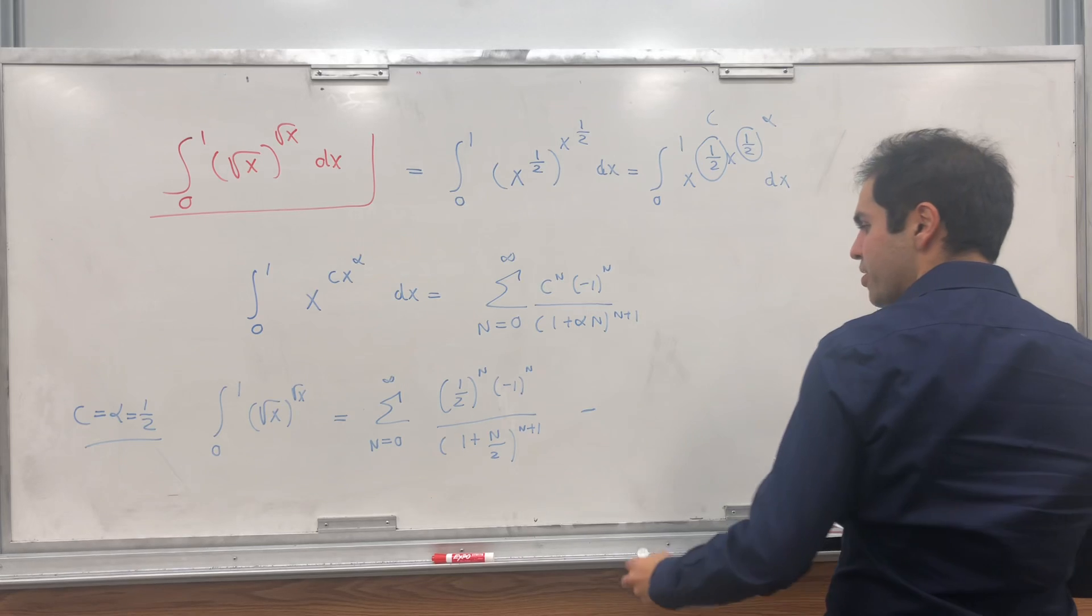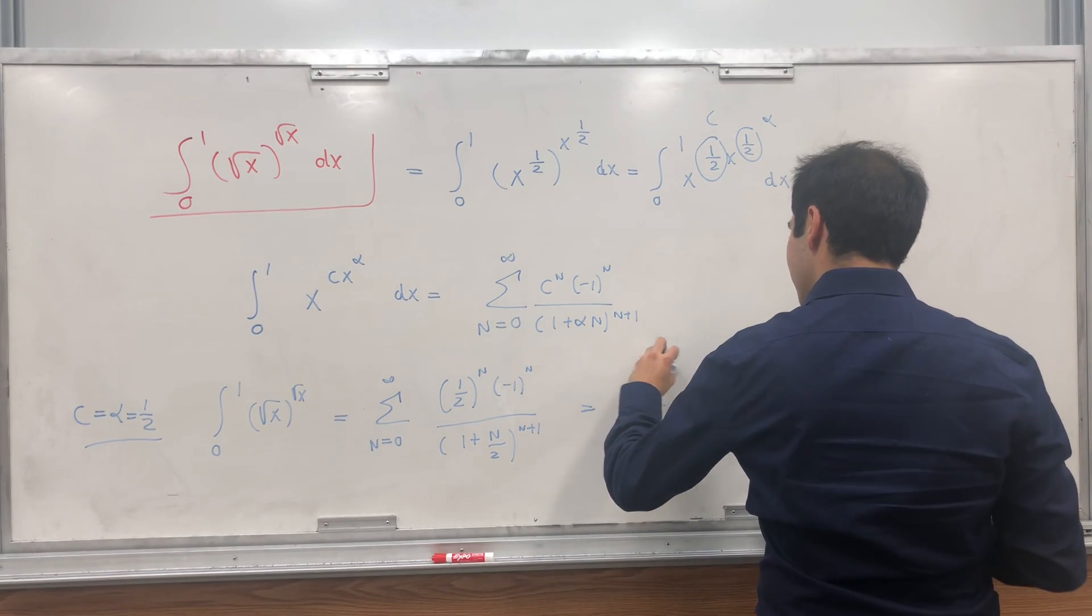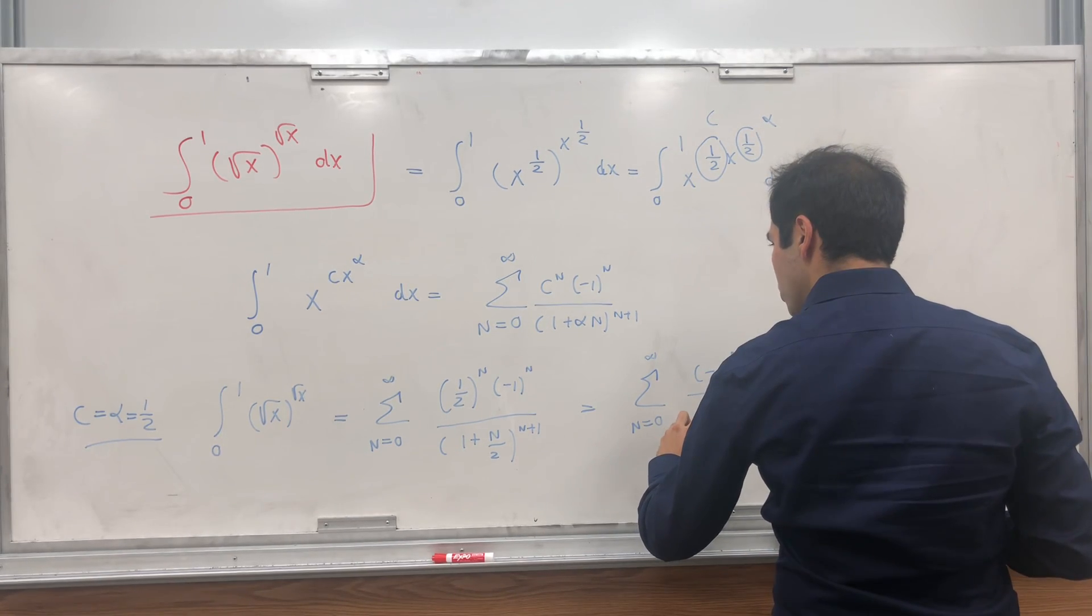And if you want, you can simplify this. So that's the sum from n equals 0 to infinity of minus 1 to the n over 2 to the n.